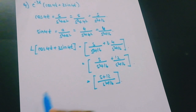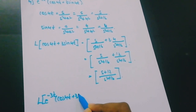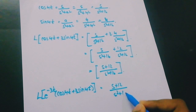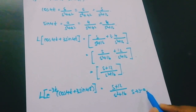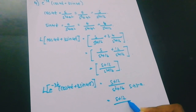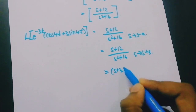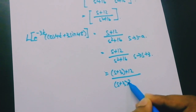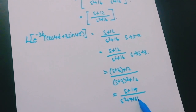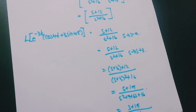Applying the first shifting theorem for L{e^(−3t)·(cos(4t)+3sin(4t))}: we have (s+12)/(s²+16) and replace s with s+3. This gives (s+3+12)/((s+3)²+16) = (s+15)/(s²+6s+9+16) = (s+15)/(s²+6s+25).